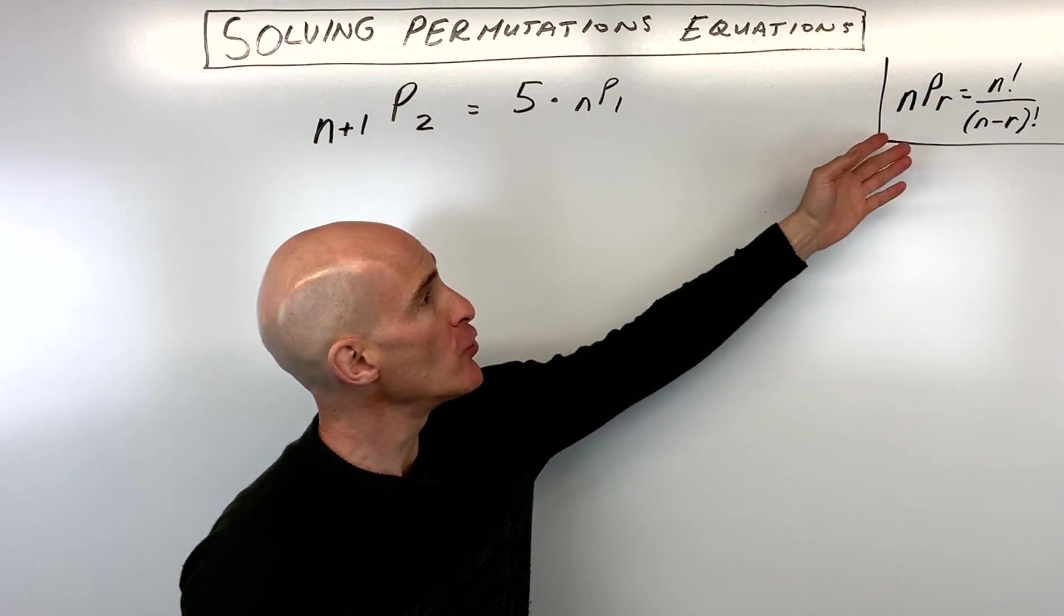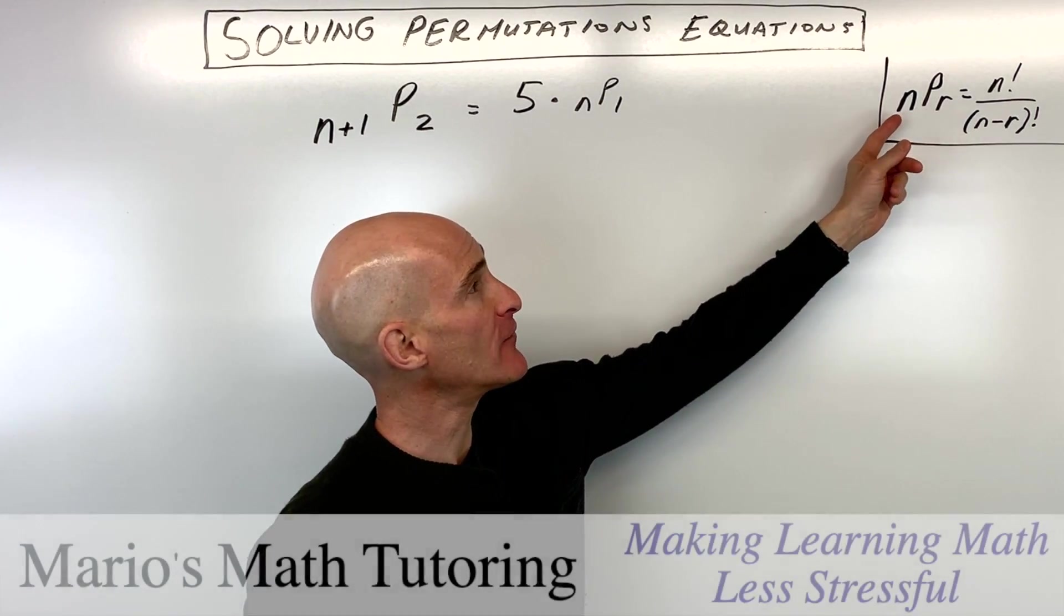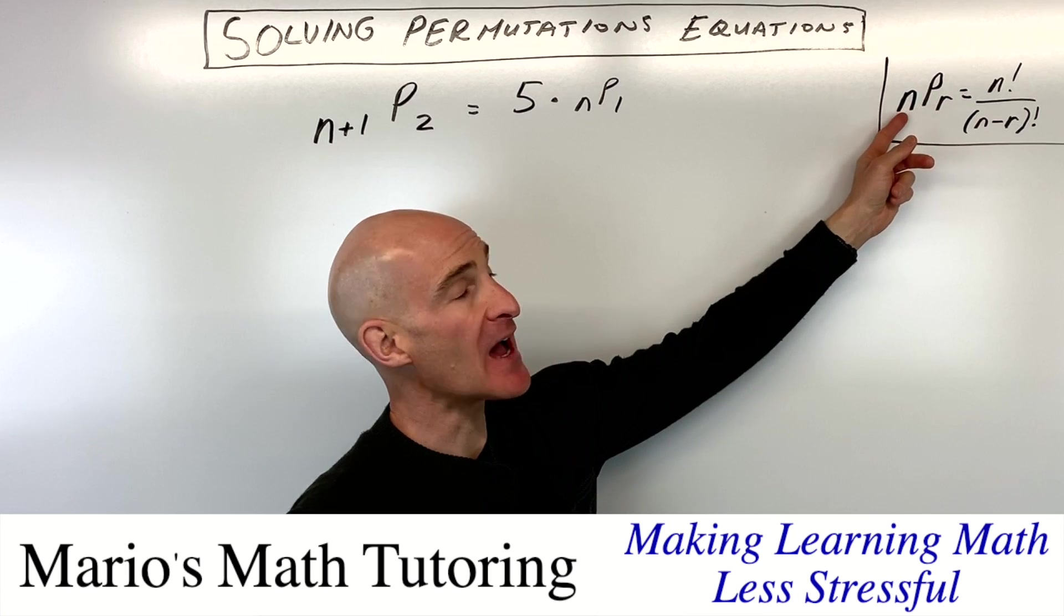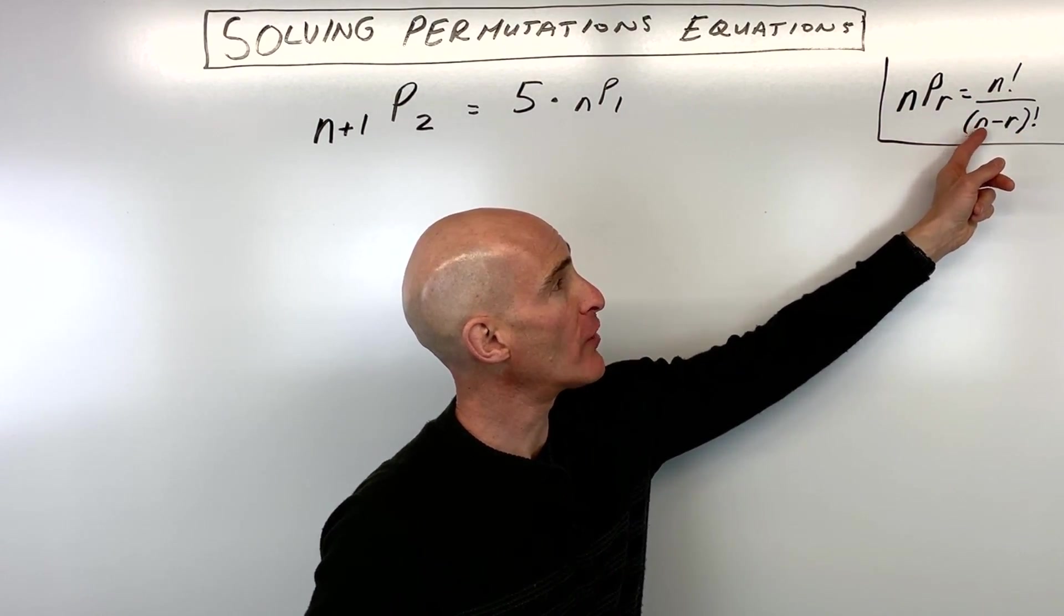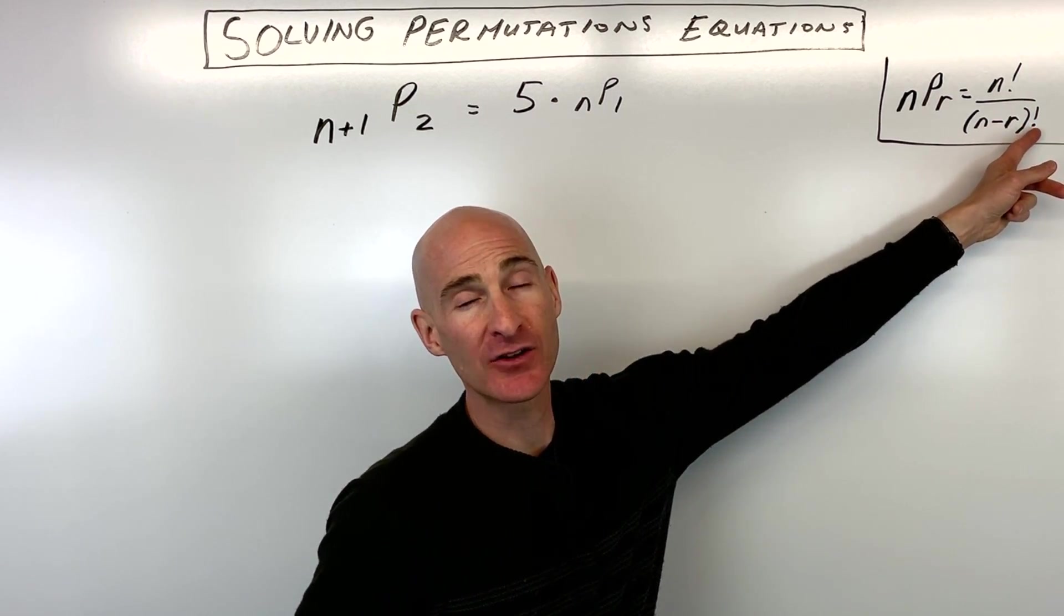So a quick review: nPr, meaning if you're picking r items out of n where the order is important, you want to use this formula here, n factorial over (n minus r) factorial.